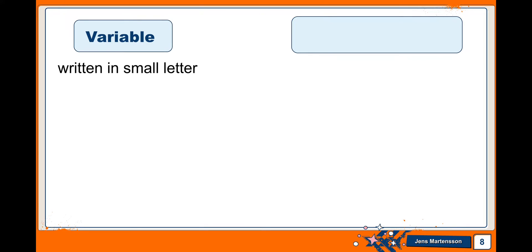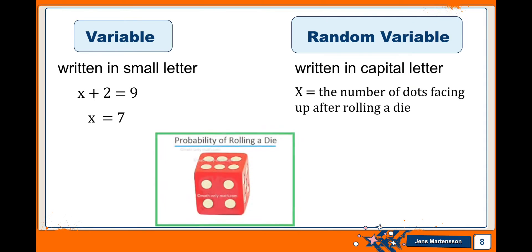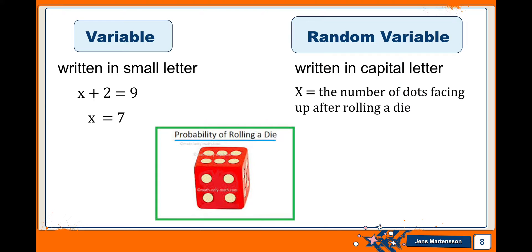Variable in algebra is written in small letter, like give a value to the equation x plus 2 is equal to 9. In this case, x can only be taken on its distinct value and that is 7. While random variable is written in capital letter. A random variable could be X is the number of dots facing up after rolling a die. Notice how the random process of rolling a die gives you a random outcome. Each time you perform the experiment, rolling once may give you 6 and that is x equals 6, and rolling again may give you 5 and that is x equals 5. Hence, it is called a random variable.